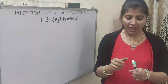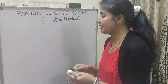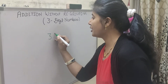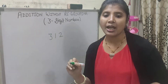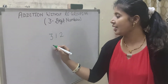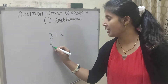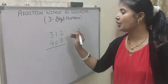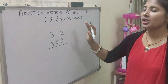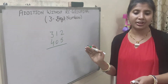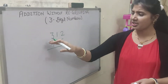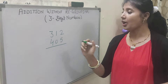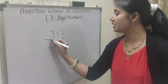Suppose I have 312 pencils and my friend has 405 pencils. Now we have to find out the total number of pencils. So what can we do? Can we subtract or add? We have to add the numbers.